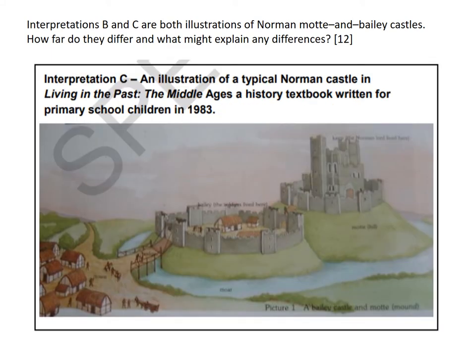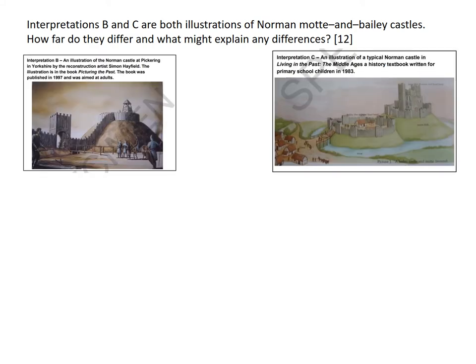Interpretation C is a similar but also quite different picture. It is an illustration of a typical Norman castle in Living in the Past: The Middle Ages, a history textbook written for primary school children in 1983. So we have two images and all we need to do is explain how far they differ and what might explain the differences.